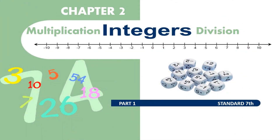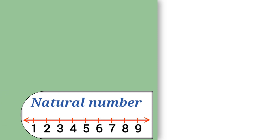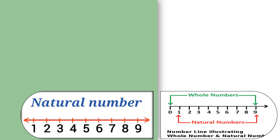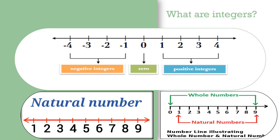Hello, my dear students. I welcome you all to the mathematics session. Today we are going to start with Chapter 2: Multiplication and Division of Integers. Let's have a quick recap of numbers. The numbers 1, 2, 3 and so on are called natural numbers. The numbers 0, 1, 2, 3 and so on are called whole numbers. The numbers -5, -4, -3, -2, -1, 0, 1, 2, 3, 4 and so on are known as integers, which include negative integers, 0, and positive integers.